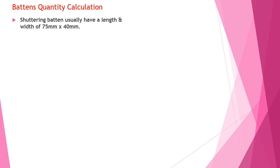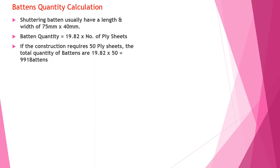Baton quantity calculation: shuttering batons usually have a length and width of 75 mm × 40 mm. Baton quantity = 19.82 × number of ply sheets. If the construction requires 50 ply sheets, then the total quantity of batons required = 19.82 × 50 = 991 batons.